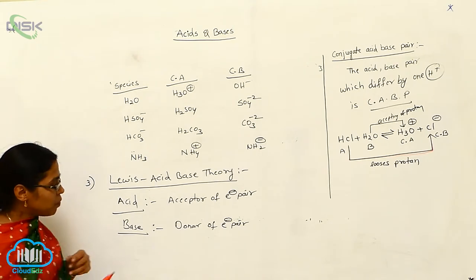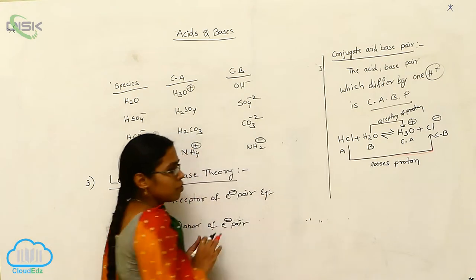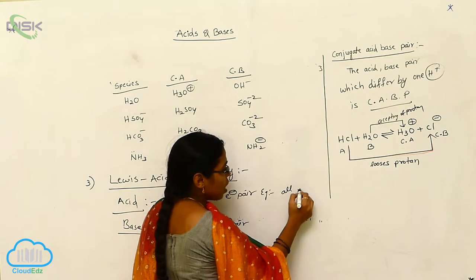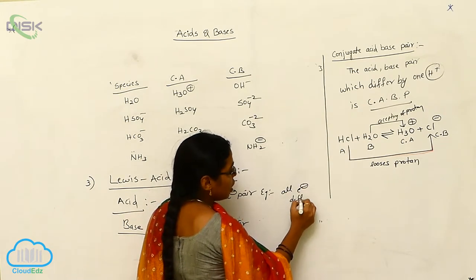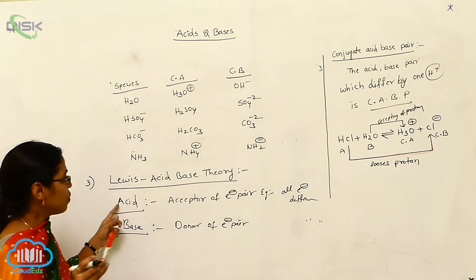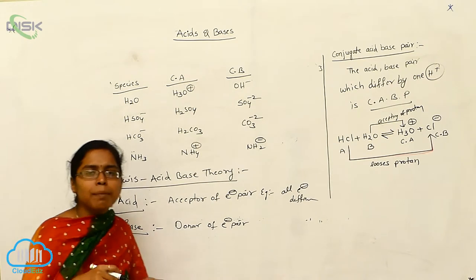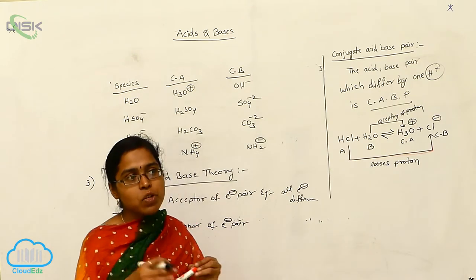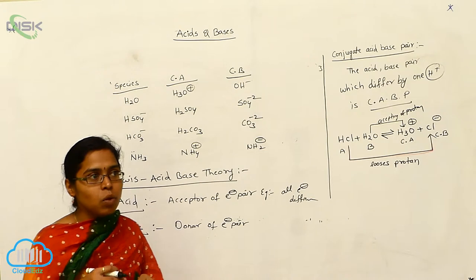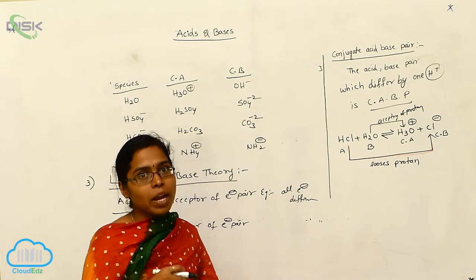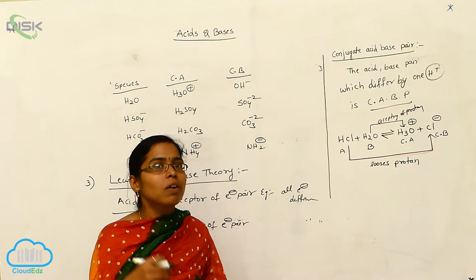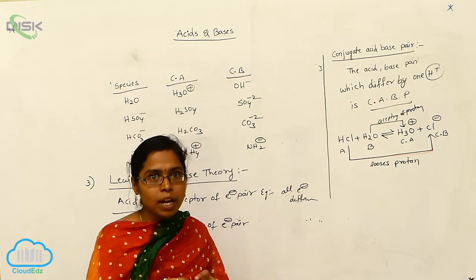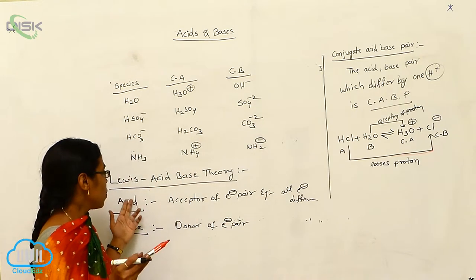Examples of Lewis acids are all electron deficient compounds. Electron deficient means the electron density is less. Those which have empty orbitals and those which have a positive charge — that means all cations — and those where the electron density is less are considered as Lewis acids.